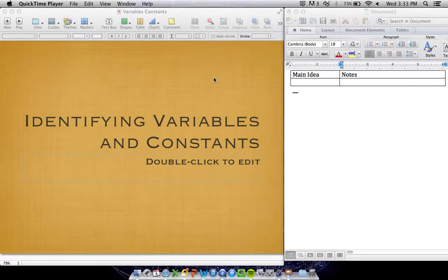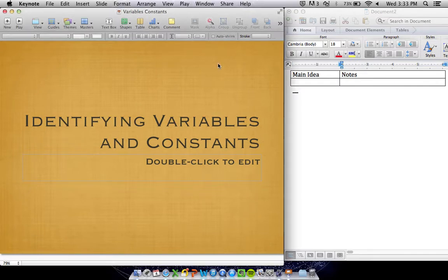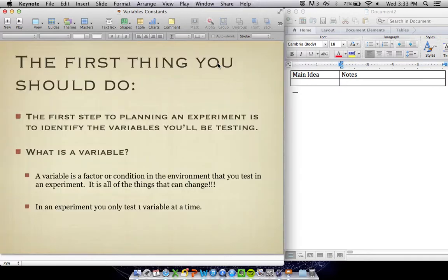Tonight's video is looking at identifying variables and constants. These are important parts of designing an experiment that make a difference in how successful your experiment is. You would do this after you've identified the problem and come up with a hypothesis. So this goes with step four, which is designing the experiment.